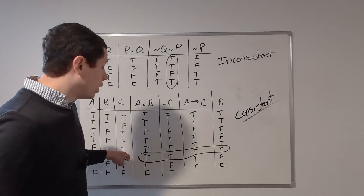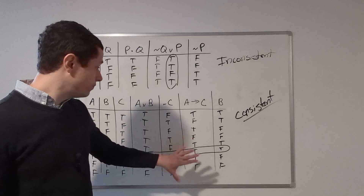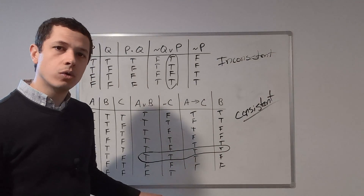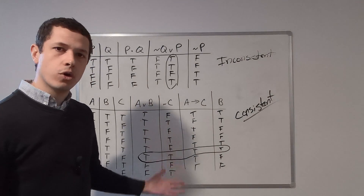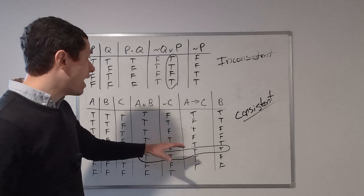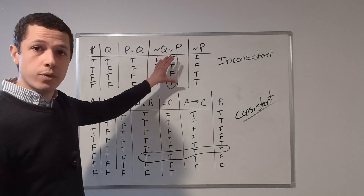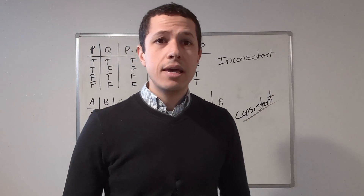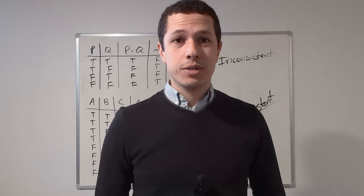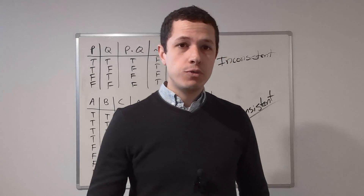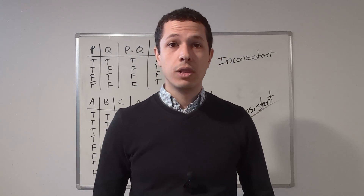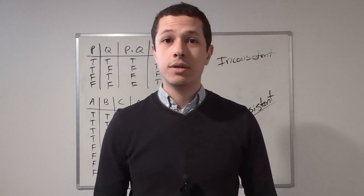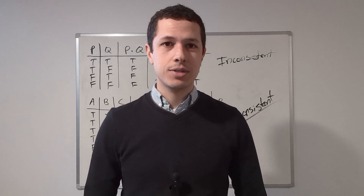To summarize: all it takes for a set of statements to be consistent is at least one row where they're all true — there could be more than one. If no such row exists, you're dealing with an inconsistent set of statements. That's really all there is to it. If you enjoyed this video and want to watch more about logic and philosophy, stick around. I'll see you next time.